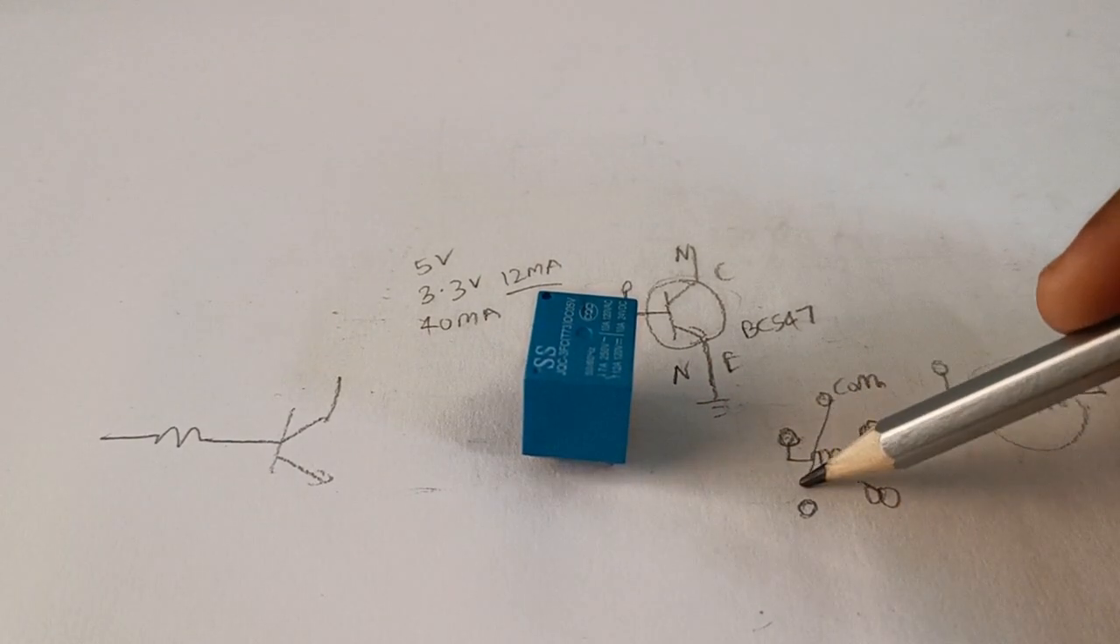When we give 5 volts across these two pins, a magnetic field will develop which will pull the metal plate. When it gets pulled, it makes a clicking sound. When the relay trips from NC to NO, you will hear a metal clicking sound which I will show you in a minute. This is the NO pin, this is the NC pin.